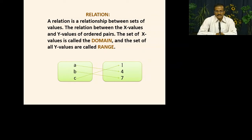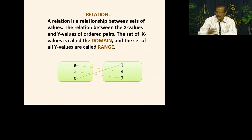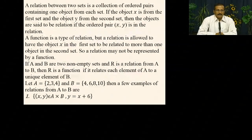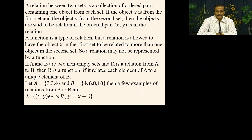These elements are connected to y — we call it a set. The set of the first elements is called the domain. A relation between two sets is a collection of ordered pairs containing one object from each set. If object X is from the first set and object Y from the second set, then we have a relation defined between them.